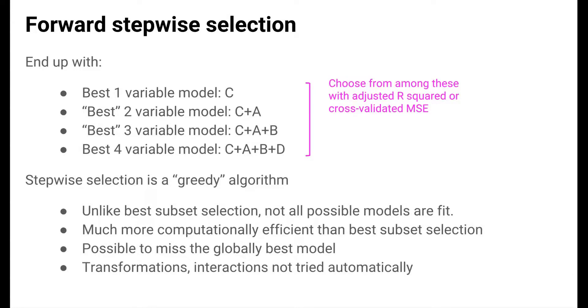This time, best is in quotes because the models selected in forward stepwise selection might not actually be the best 2 and 3 variable models. Why? Because stepwise selection methods are so-called greedy algorithms, they don't fit all possible models. In the first stage, all possible 1 variable models are fit, and there's only one possible 4 variable model. But not all of the 2 and 3 variable models are explored because we restrict ourselves to models that contain C in stage 2 and models that contain both C and A in stage 3. This behavior is called greedy behavior in algorithm jargon. This is a great improvement on computational time over best subset selection, but it is possible to miss the overall best model because we don't explore all of them. And like best subset selection, transformations of predictors and interactions are not automatically tried.